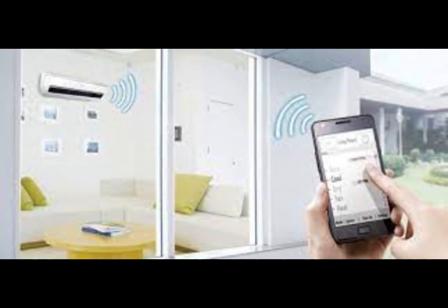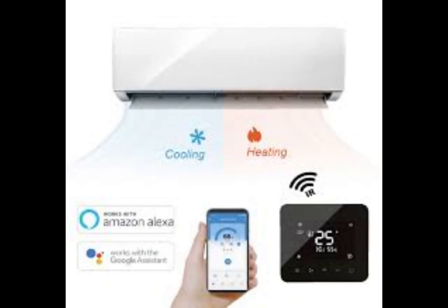Step 2 — Programming the microcontroller: Write code to control the AC using the IR transmitter module. You'll need to decode the IR signals of your AC remote and replicate those signals in your code to turn the AC on/off and adjust temperature.